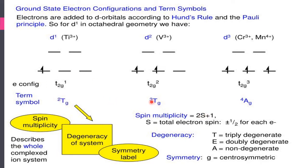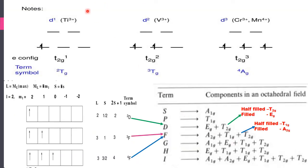For d2, with two unpaired electrons S = 1, so spin multiplicity = 2(1)+1 = 3. For d3, with three unpaired electrons S = 3/2, so spin multiplicity = 4. 'T' represents a triply degenerate term, 'A' represents a non-degenerate (singly degenerate) term, and 'E' represents a doubly degenerate term.